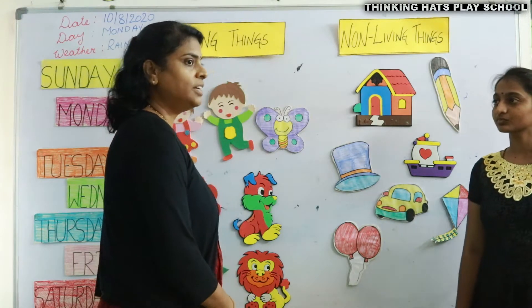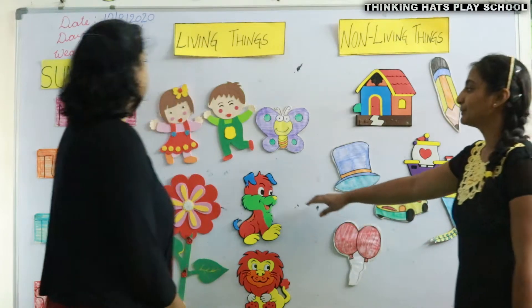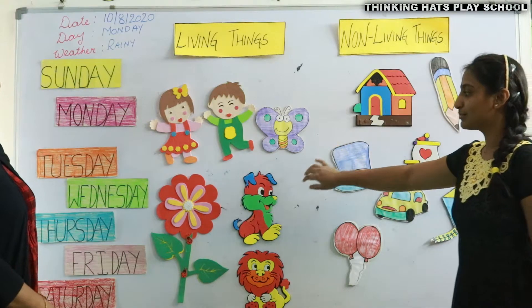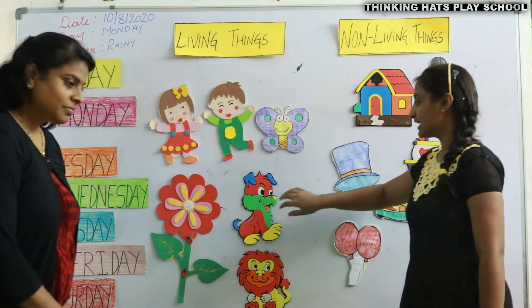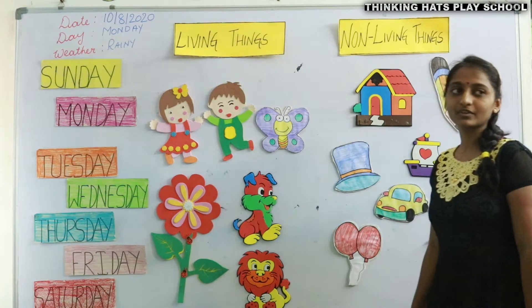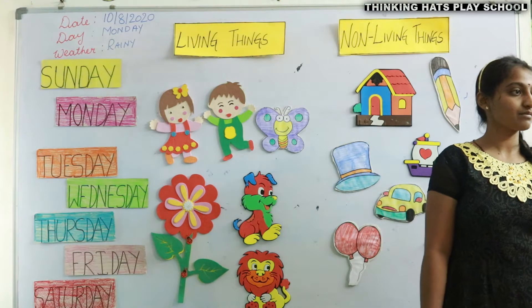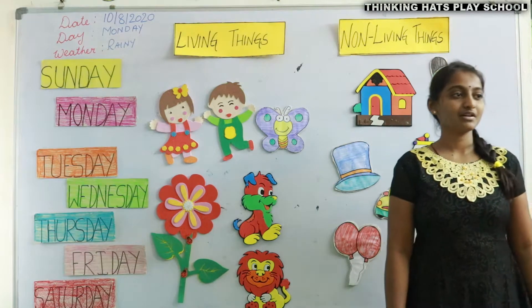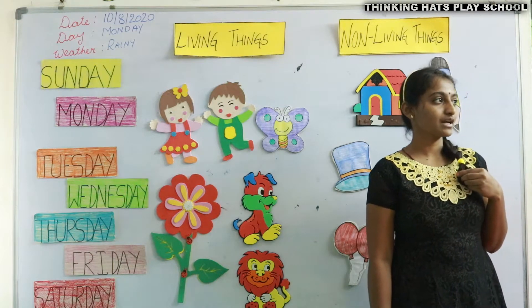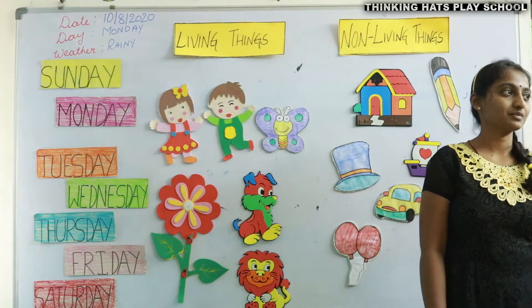See — living things. Examples: people, a girl and a boy, a butterfly, plants, flowers, and animals like a lion and a tiger. So we see many things around us — living and non-living things. The things that have life are called living things.